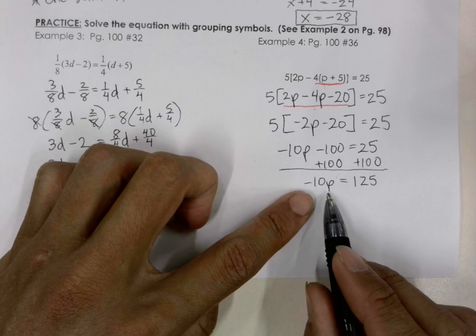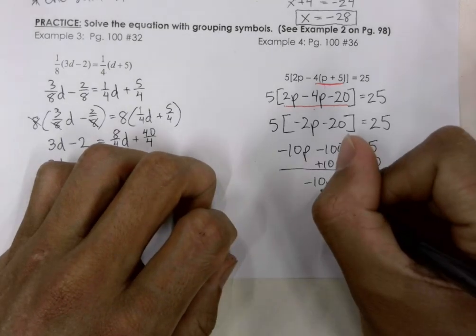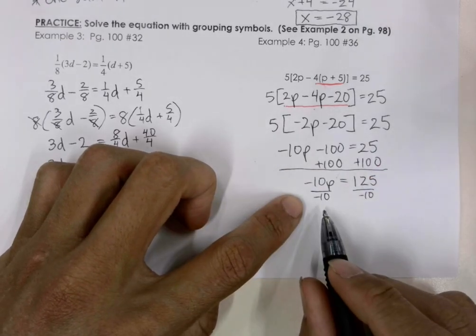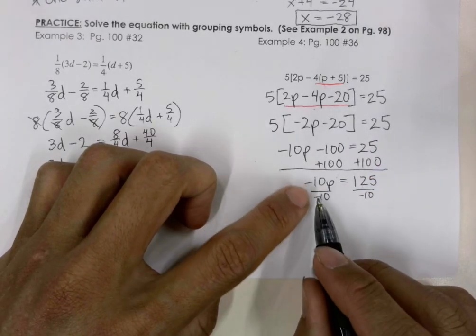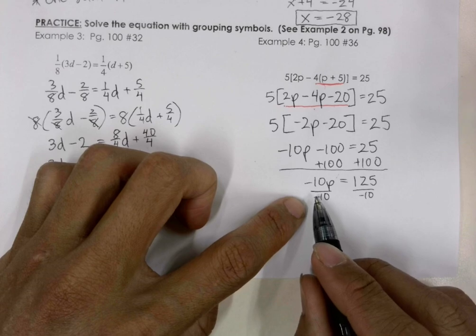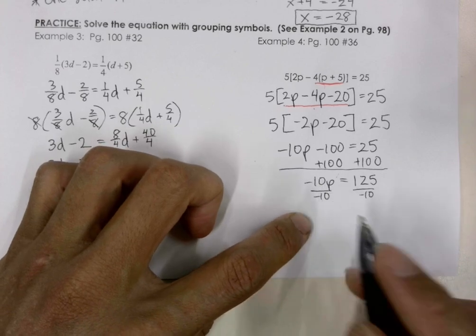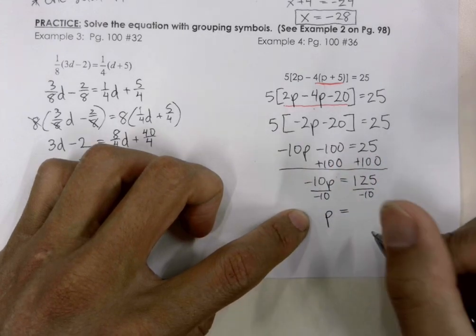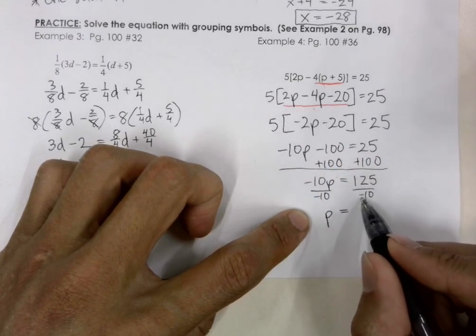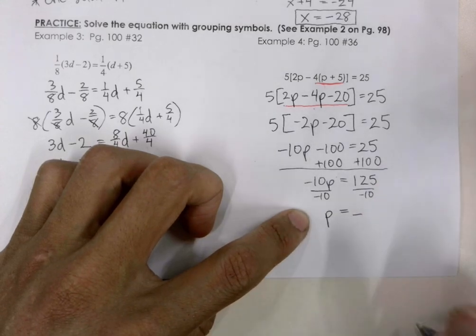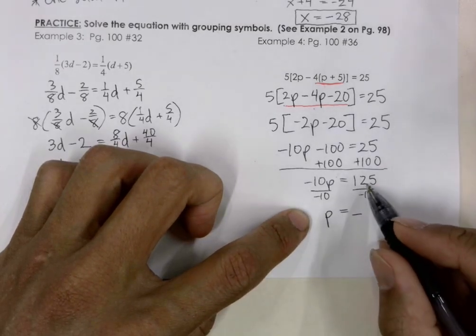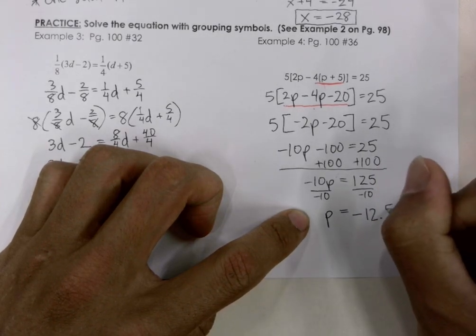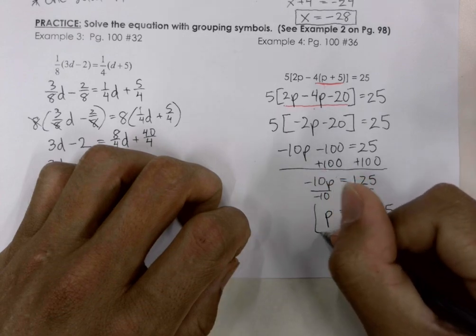To isolate the variable, we divide both sides of the equal sign by negative 10. Negative divided by negative is positive, so p equals positive. But positive 125 divided by negative 10 — positive divided by negative is negative — so p is equal to negative 12.5. We'll put a box around that.